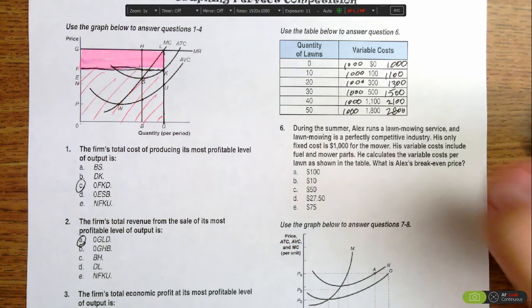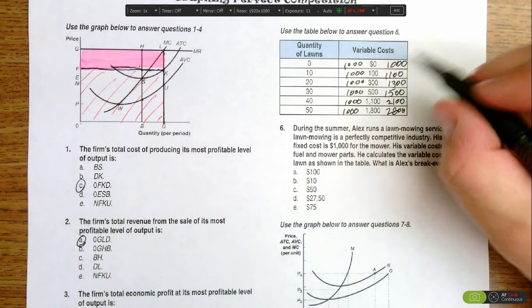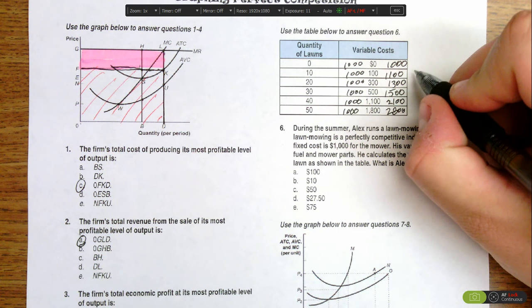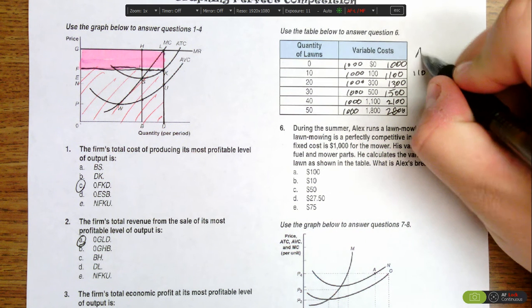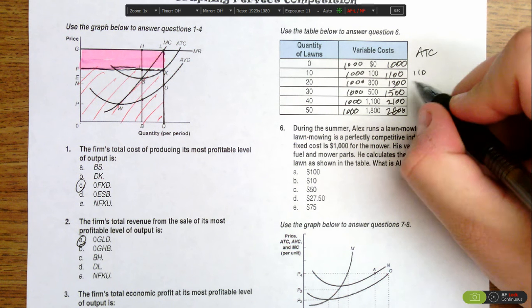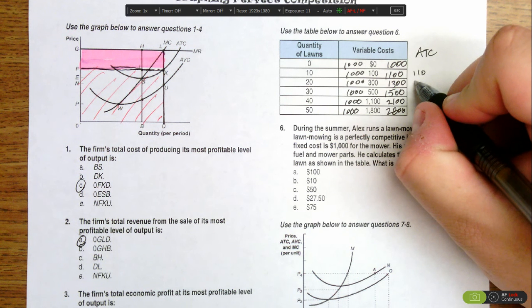If you divide $1,100 by 10, you find that the average total cost for 10 lawns is $110. We can write ATC here. For 20 lawns, $1,300 divided by 20 gives us $65.